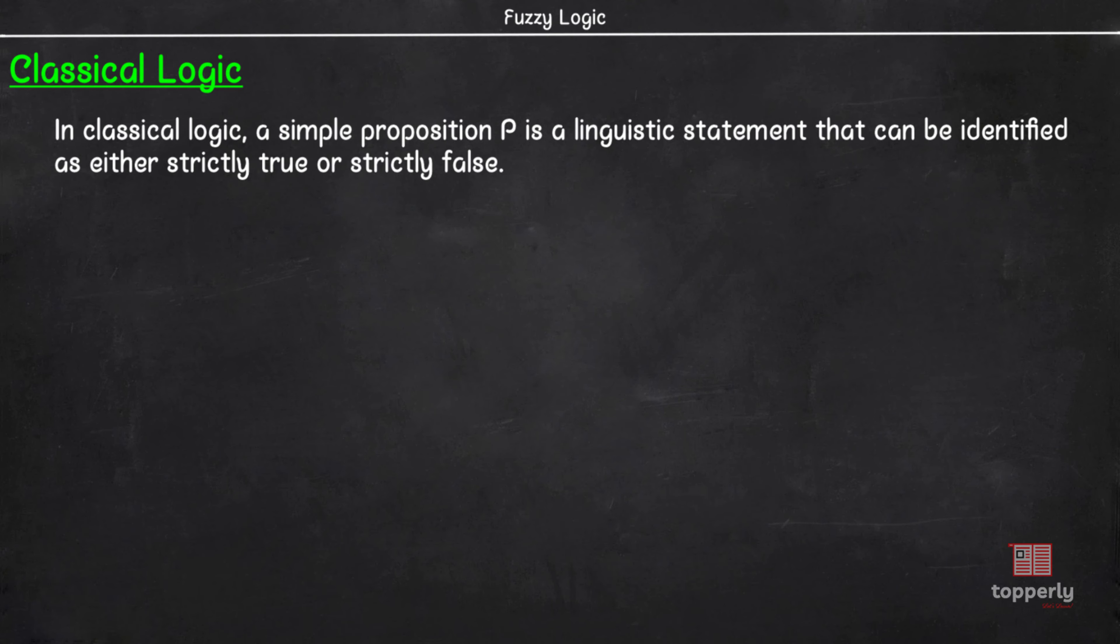In classical logic, a simple proposition P is a statement that is either strictly true or strictly false. Some examples for propositions are 2 plus 2 is 4, 1 plus 3 is 0, and cars have 3 wheels. Here, the first statement is true, but the next two statements are false.